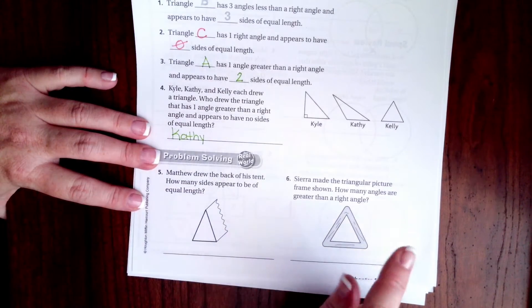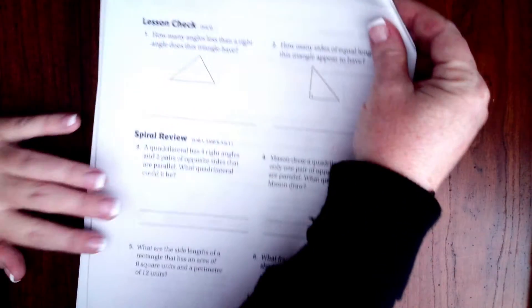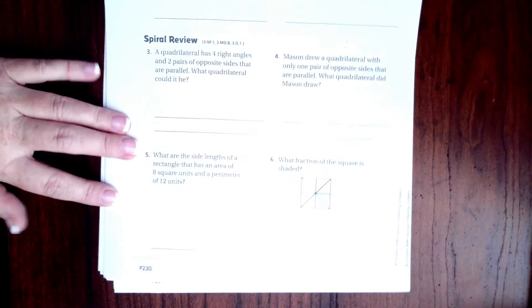I am going to go ahead and let you guys do five and six. We're going to go on to the back where you guys are also going to do the lesson check, then we are going to do this spiral review.